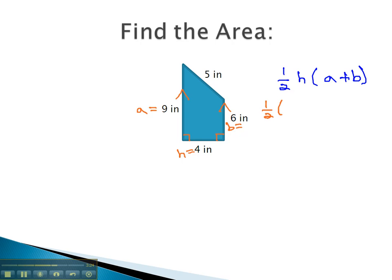Plugging this into our formula, we have one-half times the height, or the 4 inches, times A plus B, or 9 plus 6 inches.